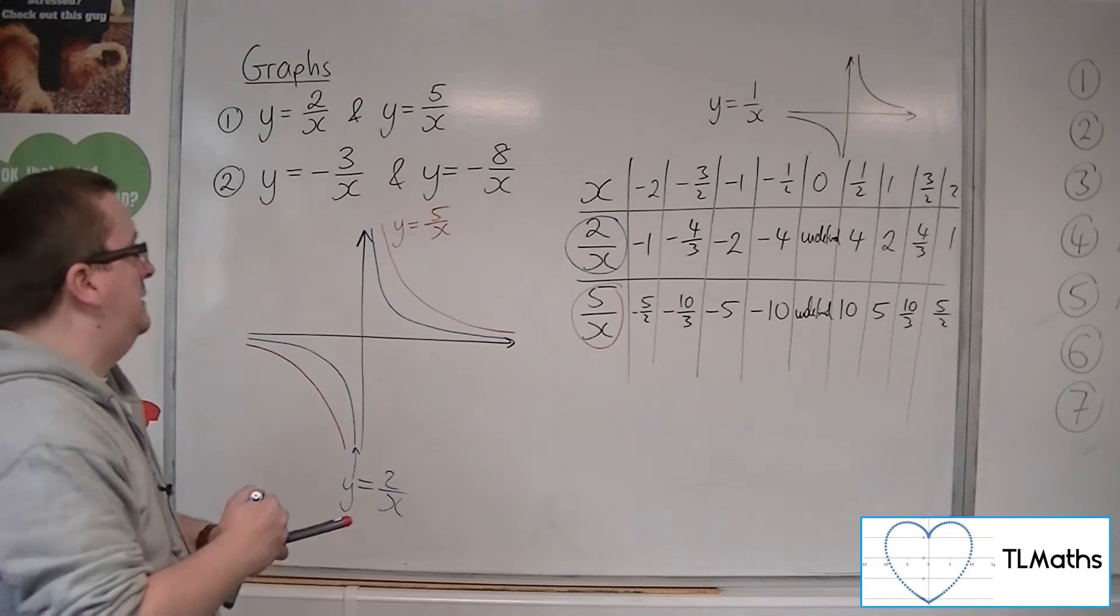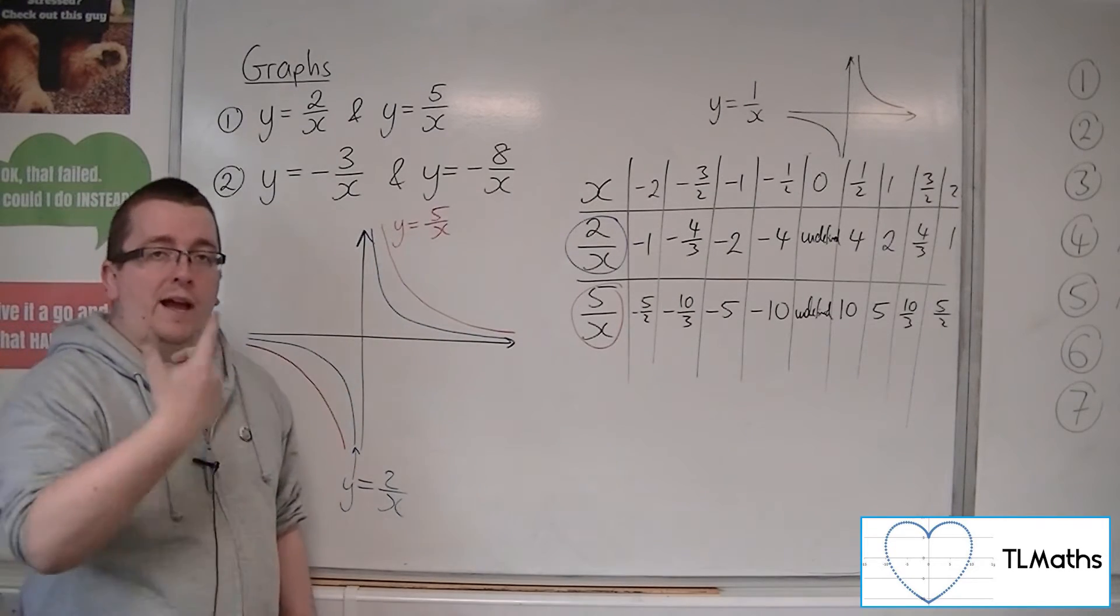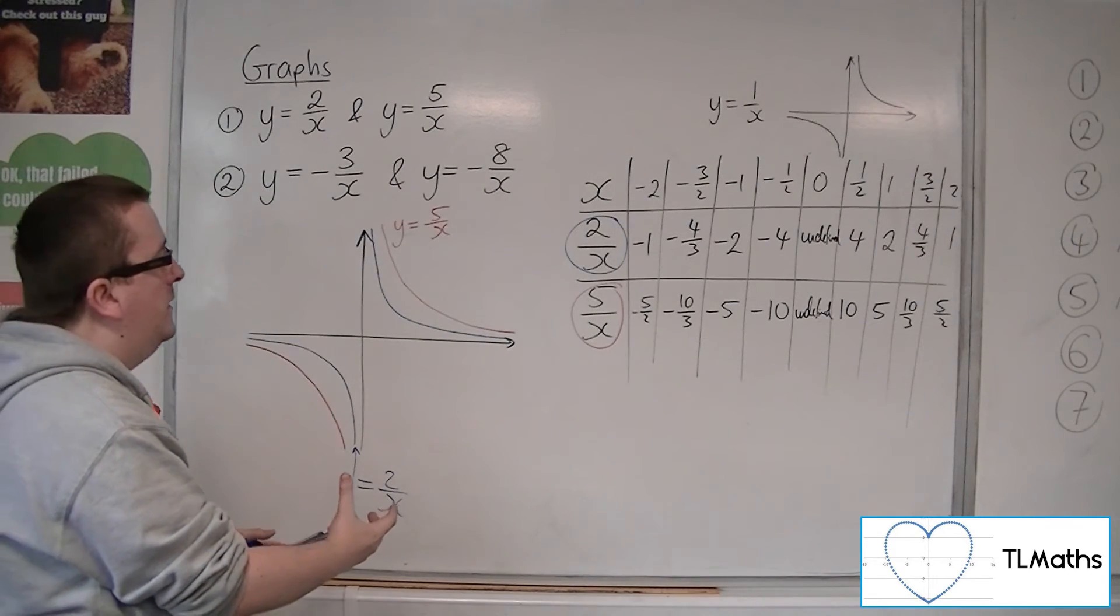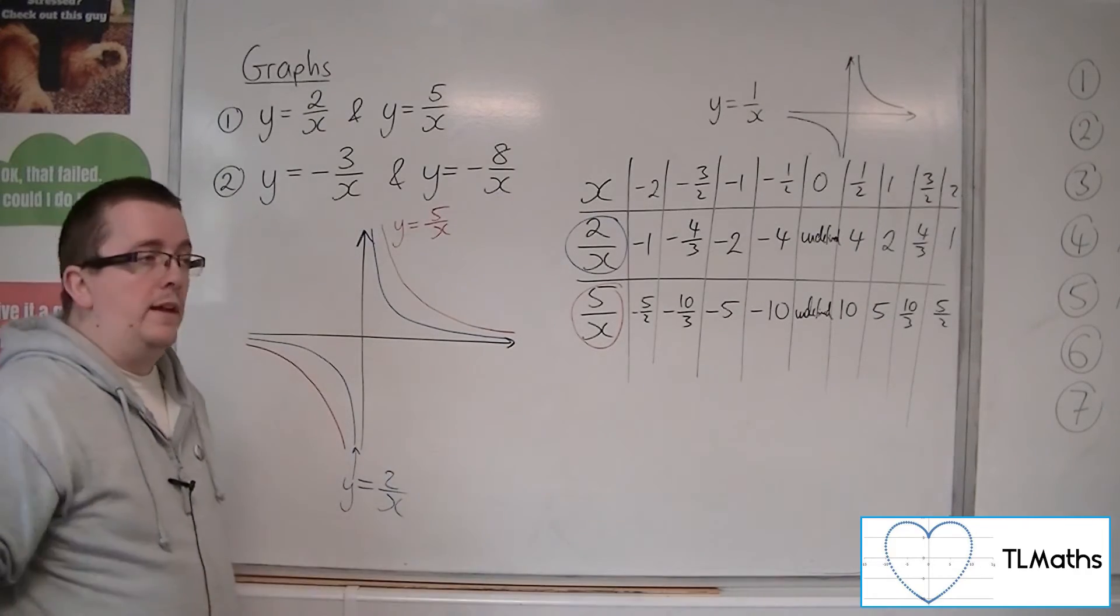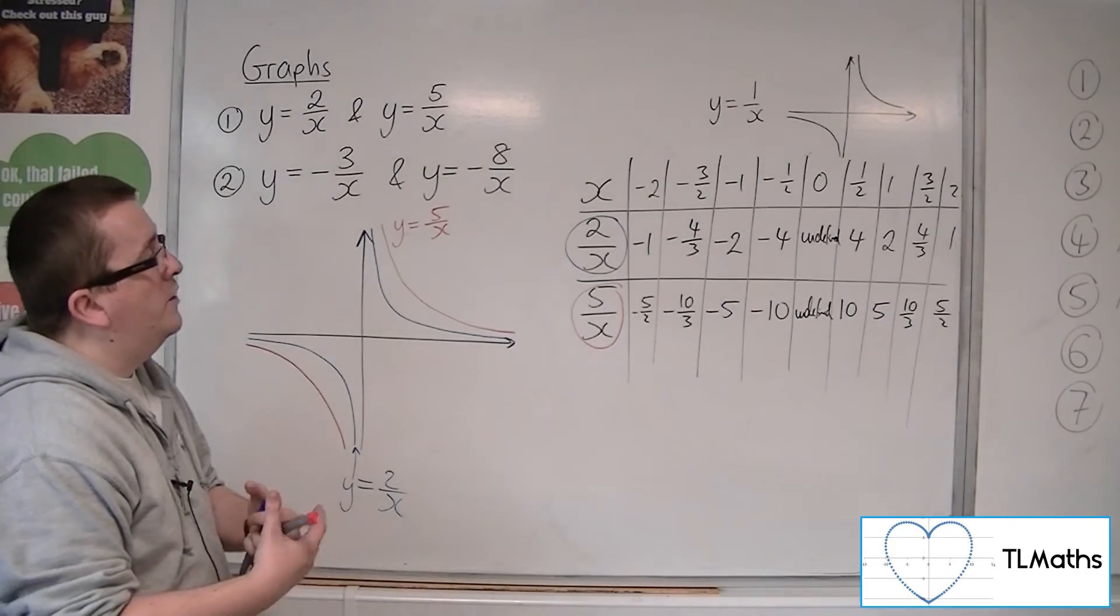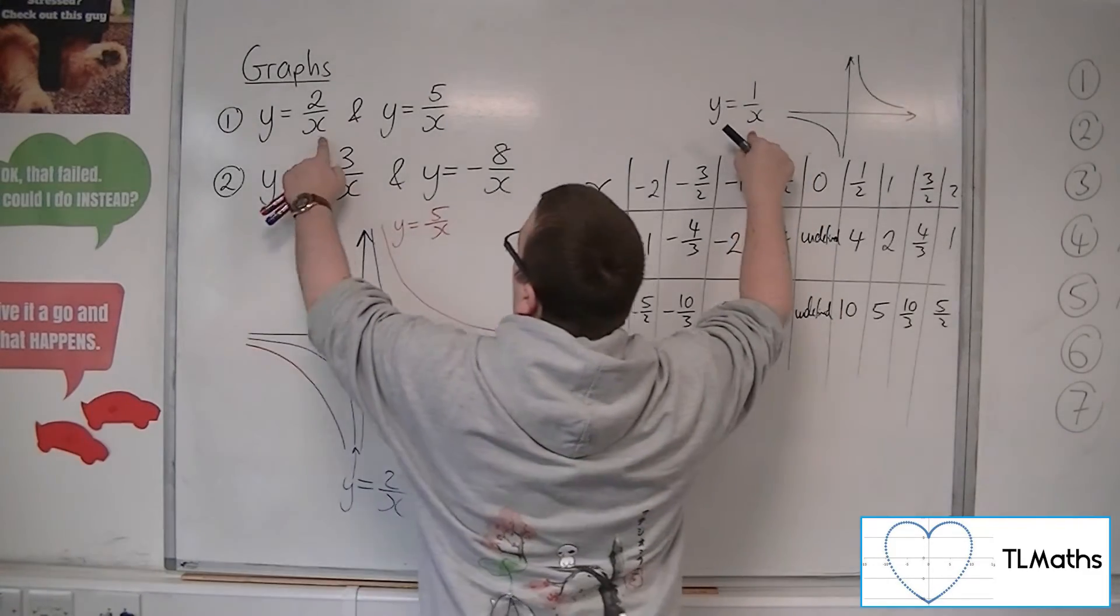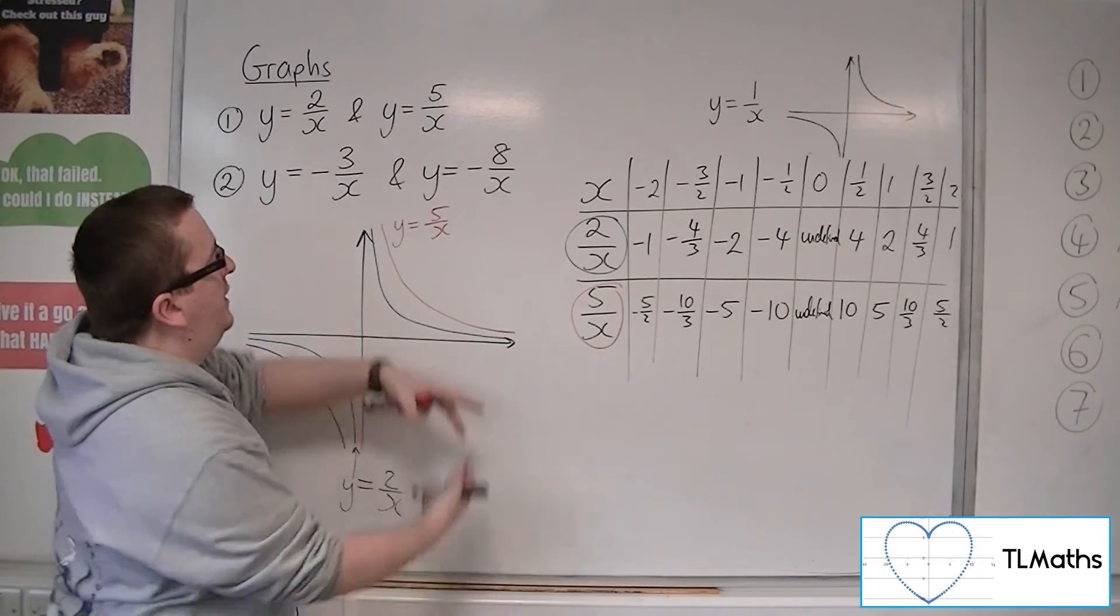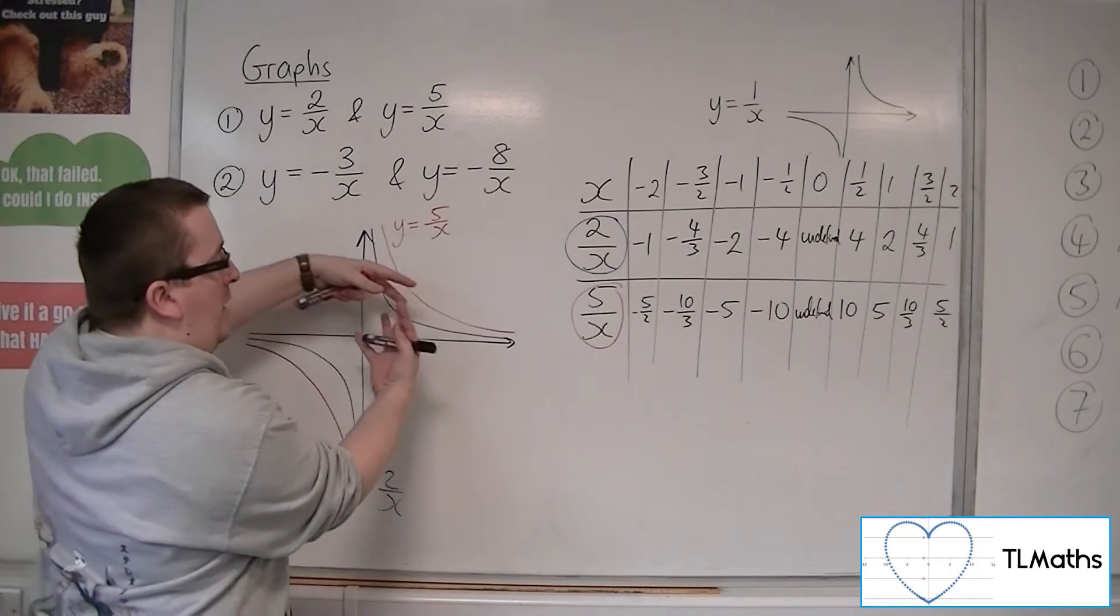So what's happening is that because you're changing that value of a, that value in the numerator, and it's getting larger, that means that the y values will be getting larger, because you're multiplying 1 over x by the larger and larger number. So just think of it as 1 over x times 2, and 1 over x times 5.